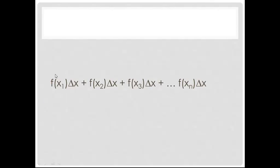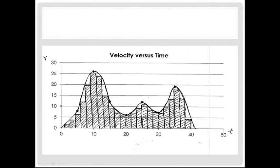And f of x1, f of x2, this is basically how high, what the y is, or in this case the velocity, is at each point, at each 2 second point.